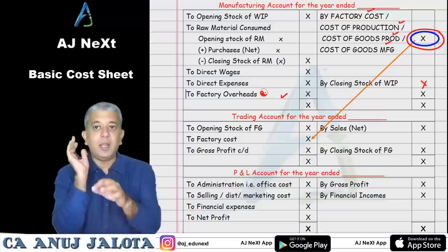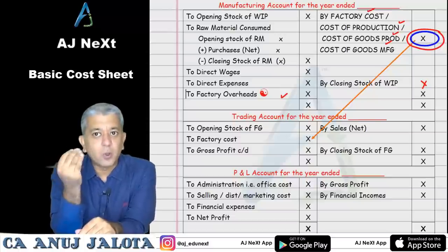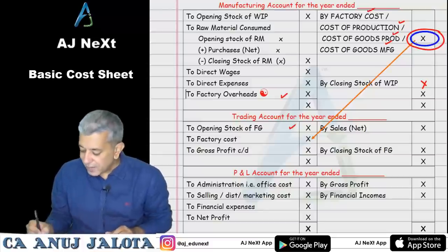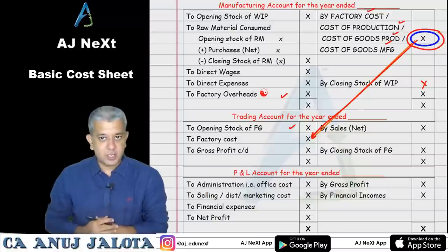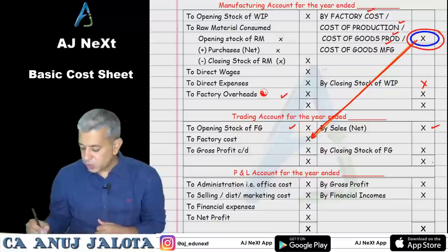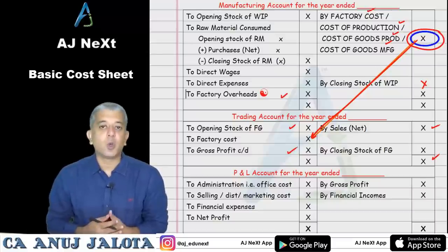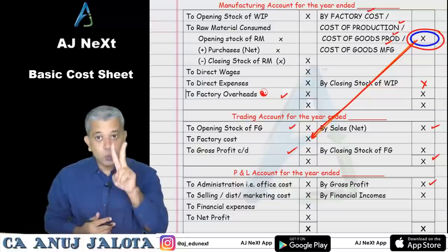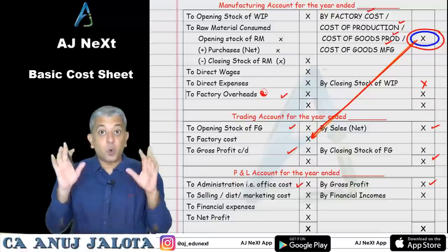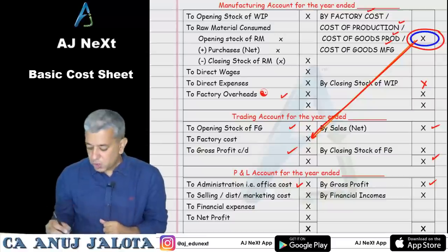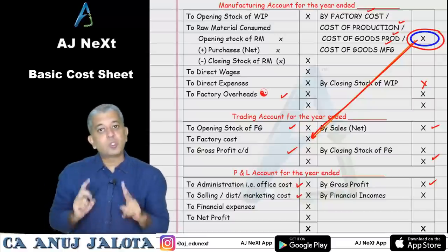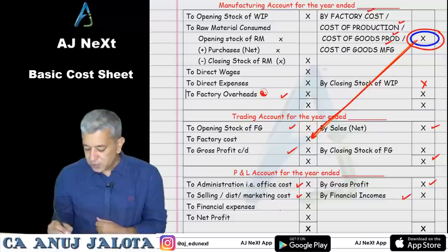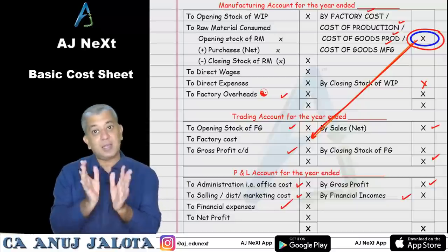Then comes the trading account. Trading means selling, and we sell finished goods. So we start with opening stock of finished goods, then the factory cost figure comes from above, then closing stock of finished goods on the credit side, sales on the credit side, and the balancing figure is gross profit carried down. Then in P&L: administration overheads (general administration) and selling, distribution & marketing costs.